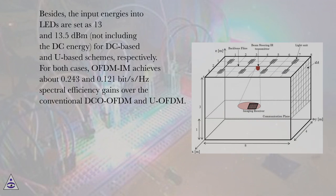For both cases, OFDM-IM achieves about 0.243 and 0.121 bits per second per Hz spectral efficiency gains over the conventional DCO-OFDM and U-OFDM.